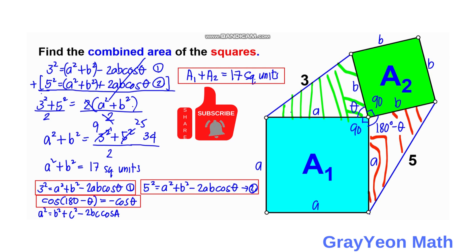Area 1 + Area 2 = 17 square units, and that is our answer. Thank you for watching. Please like the video if you enjoyed the solution, subscribe to the channel, and hit the bell icon for more math videos. If you have alternative solutions, please write them in the comment section below.